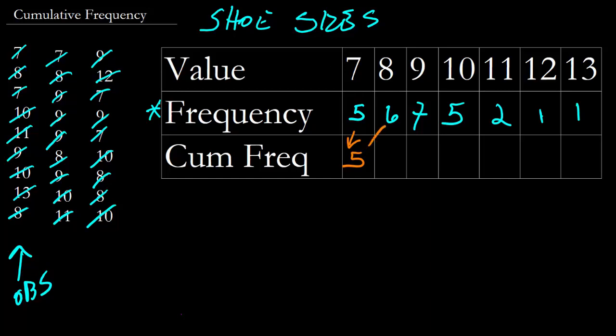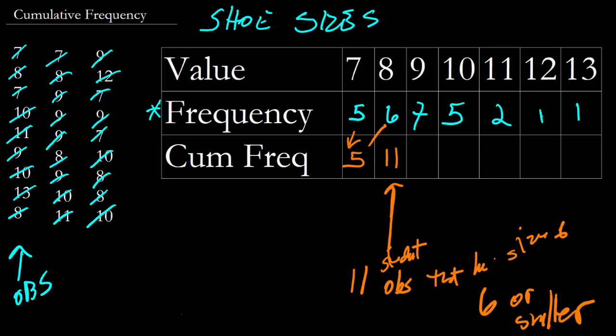So we have five and that's where we start a cumulative frequency. Then we take five and we add six to that. Five plus six is 11. What we're saying here at 11 is there are seven students observations that have a shoe size of six or smaller. That's what cumulative frequency really tells us. It tells us what's everything on the left-hand side of the table or the left-hand side of the chart.